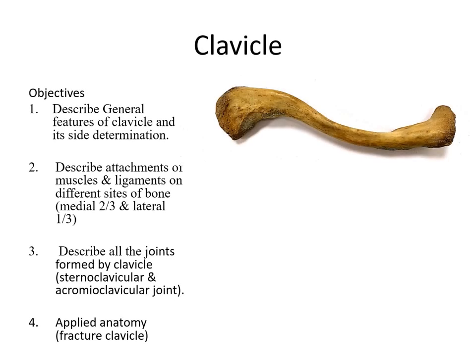Starting with the clavicle, the objectives are: you should be able to know the general features of the clavicle and its side determination; you should be able to describe the attachment of different muscles and ligaments on the different sides of the bone - on the medial two-third and the lateral one-third; and you should be able to describe all joints formed by the clavicle, that is the sternoclavicular joint and the acromioclavicular joint, and the applied anatomy regarding fracture.